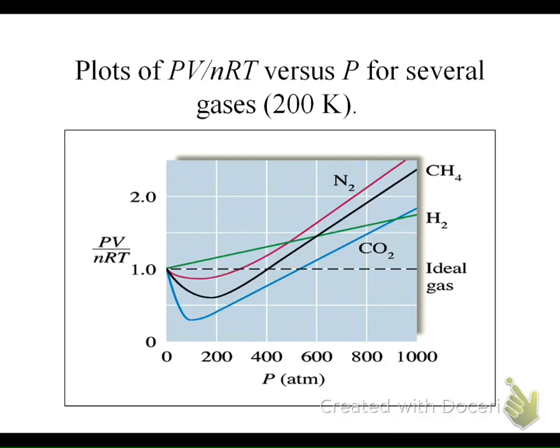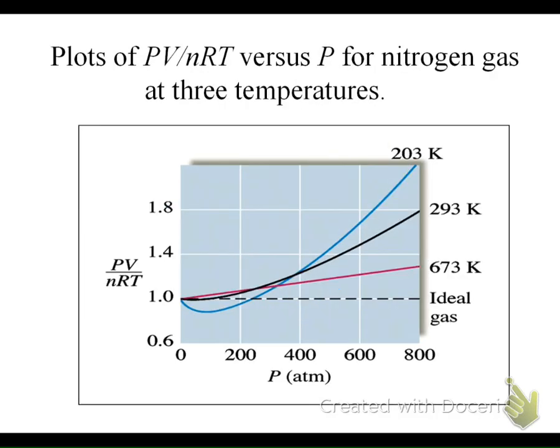Here's a plot of PV=nRT for several gases, looking at what happens with atmospheric pressure as well as the relationship. Here's another one for nitrogen gas at three different temperatures, showing the effect of those changing pressures.